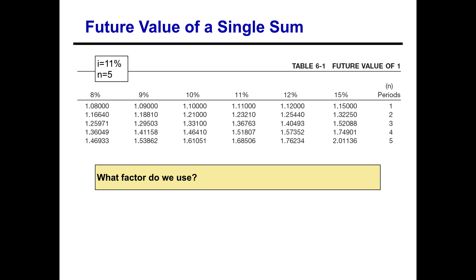You find your percentage column — in this case 11% — right there in the middle, and scroll down until you get to five periods. You find that the factor you're going to use is 1.68506.